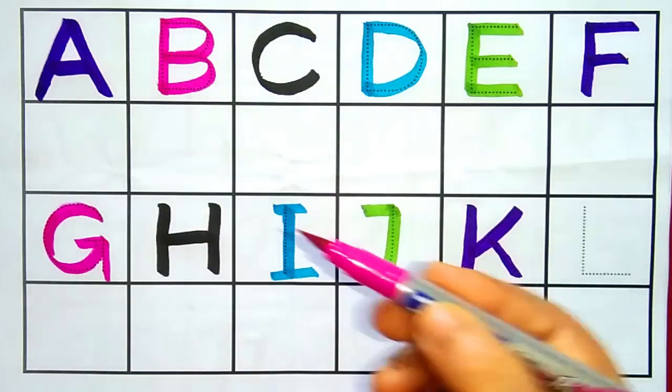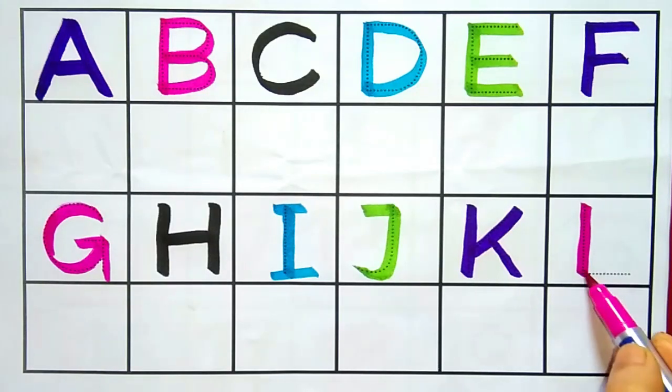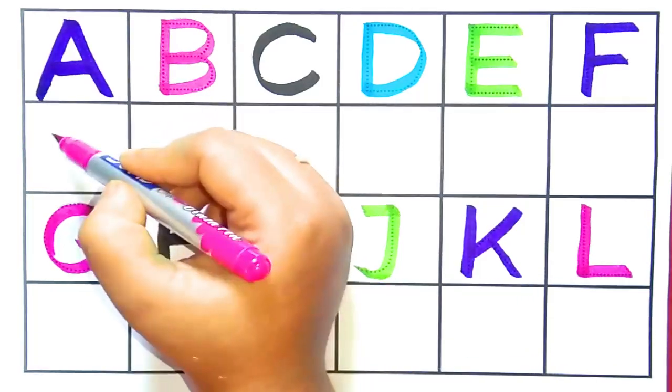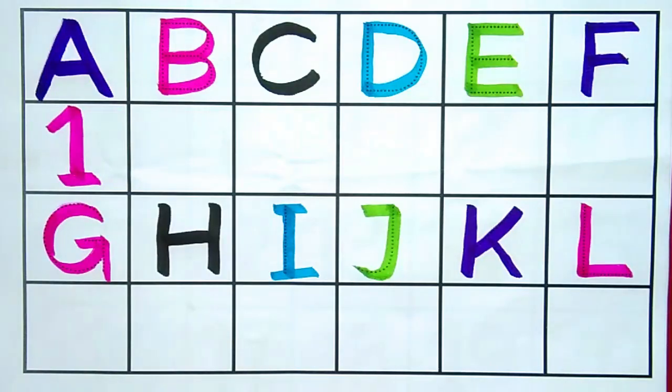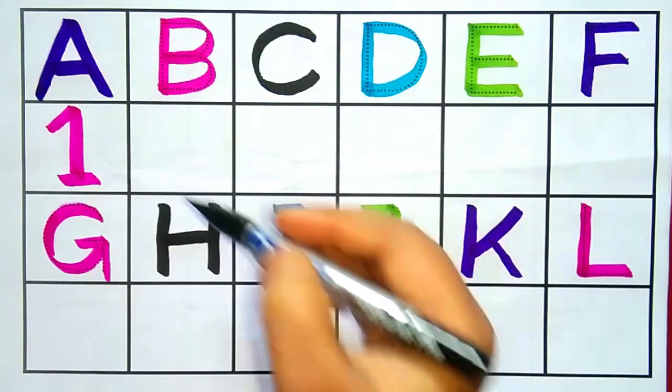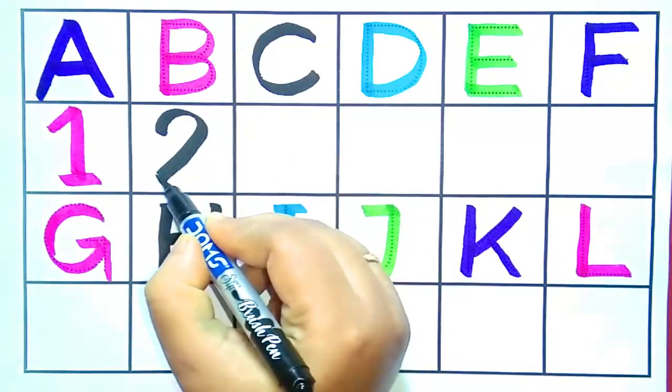L for light, pink color. One, number one, black color. Two, number two, sky blue color.